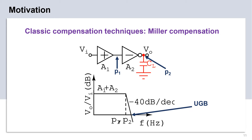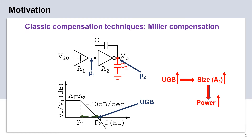Let us look at a simple two-stage amplifier in the figure. Without any compensation, the two poles P1 and P2 contributed by the two nodes will be close to each other in the frequency plane. This will result in a minus 40 dB per decade roll-off around the unity gain frequency of the system, as shown in the frequency response. Thus, the system will be unstable. In Miller compensation, we add a capacitor parallel to one stage as shown in the slide. This essentially pushes the two poles P1 and P2 apart as shown in the frequency response. Pole P2 is sent out of the UGB so that a minus 20 dB per decade roll-off is maintained near UGB. This ensures stability in negative feedback.